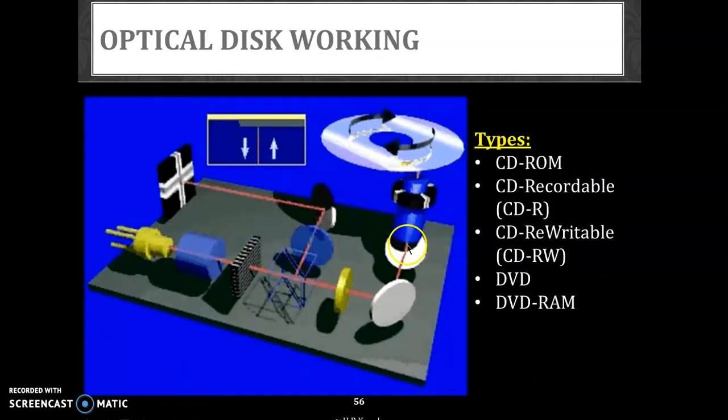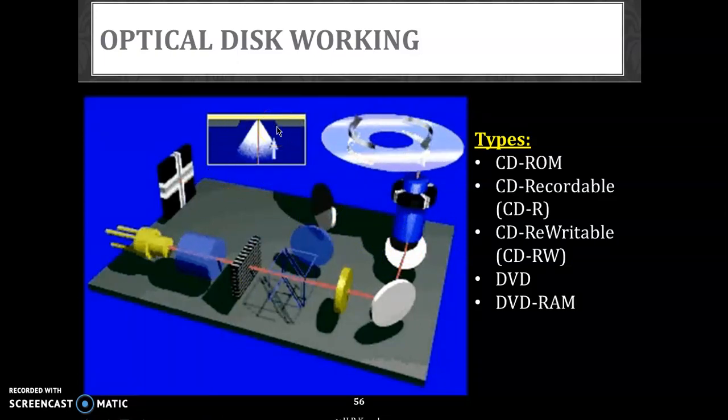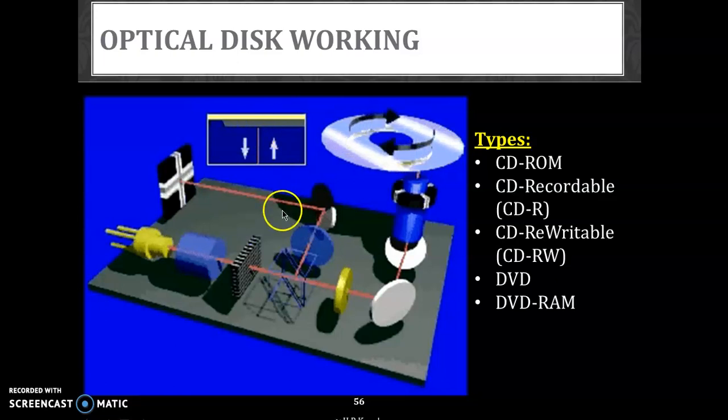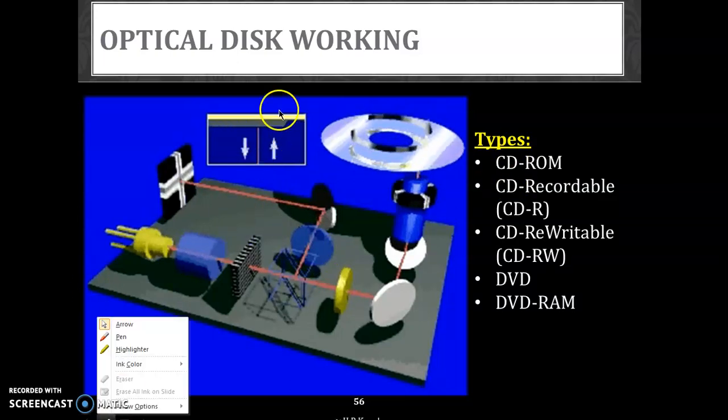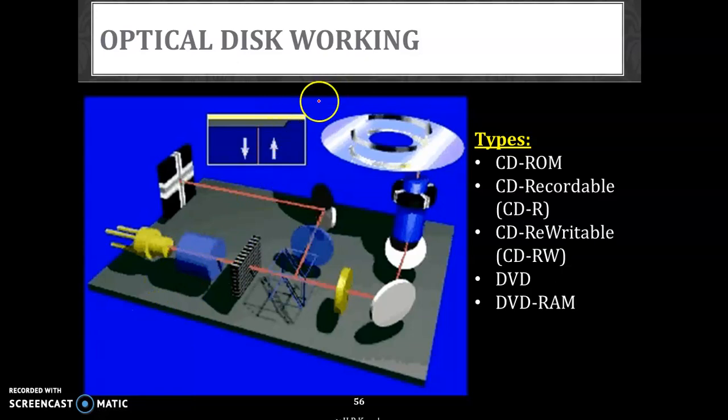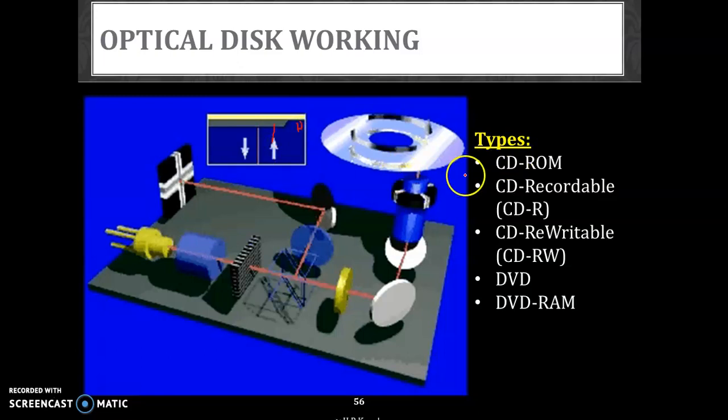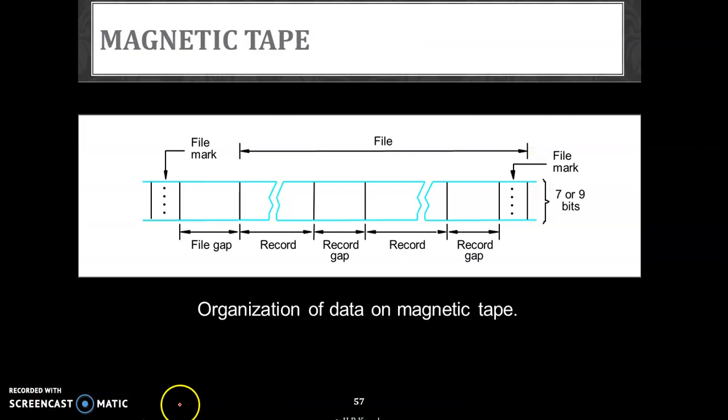If you observe the same small animation has been written for all the disk. This is the pit we have, and this is the land we have. So this is how it is actually working. Here you can observe, this is your land, this is your pit. So there are many different types of optical disk - CD-ROM, CD recorder or recordable, CD rewritable, DVD, DVD rewritable.